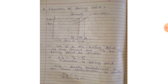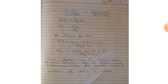The elevation of boiling point, delta Tb, is directly proportional to the molar concentration (molality) of the solvent, i.e., delta Tb ∝ m. Introducing the proportionality constant Kb: delta Tb = Kb × m. Kb is called the boiling point elevation constant, also known as the molal elevation constant.